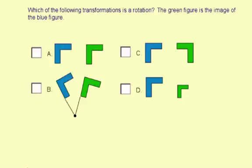Which of the following transformations is a rotation? The green figure is the image of the blue figure. For a rotation, we want to look for a shape that turns, and that's choice B.